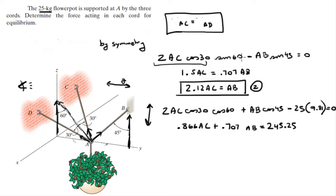When you plug equation 2 into here, basically you are replacing the AB by 2.12AC. You get 2.366AC equals 245.25, which means AC is equal to 103.7 Newtons.